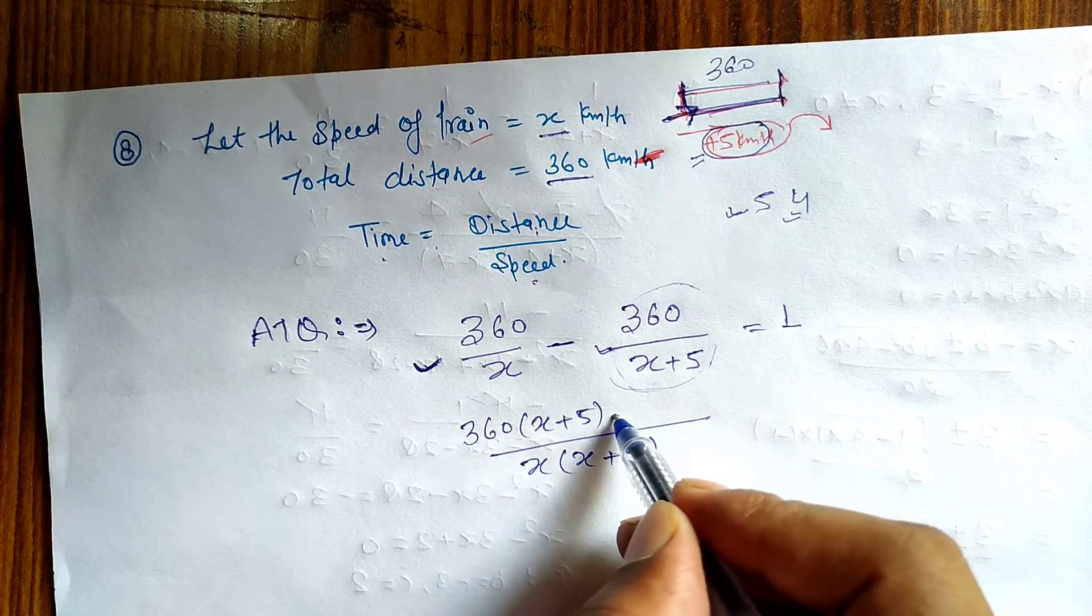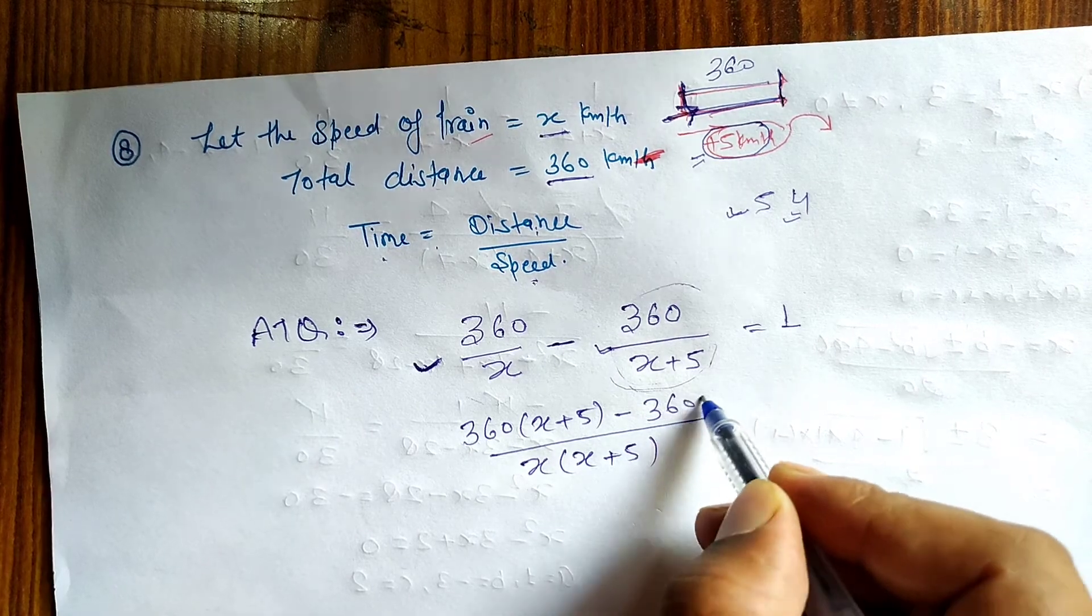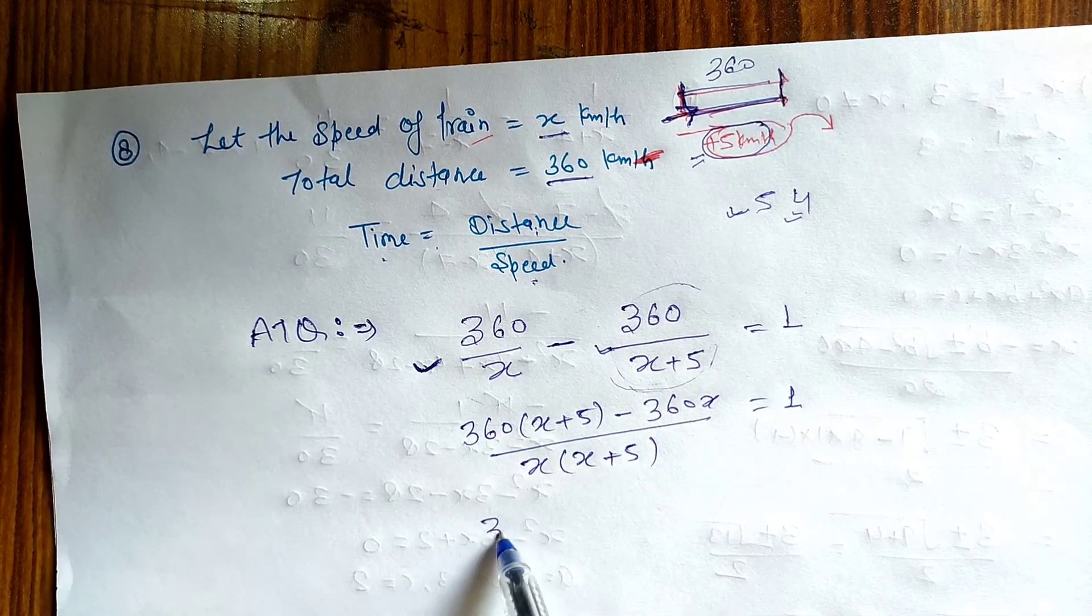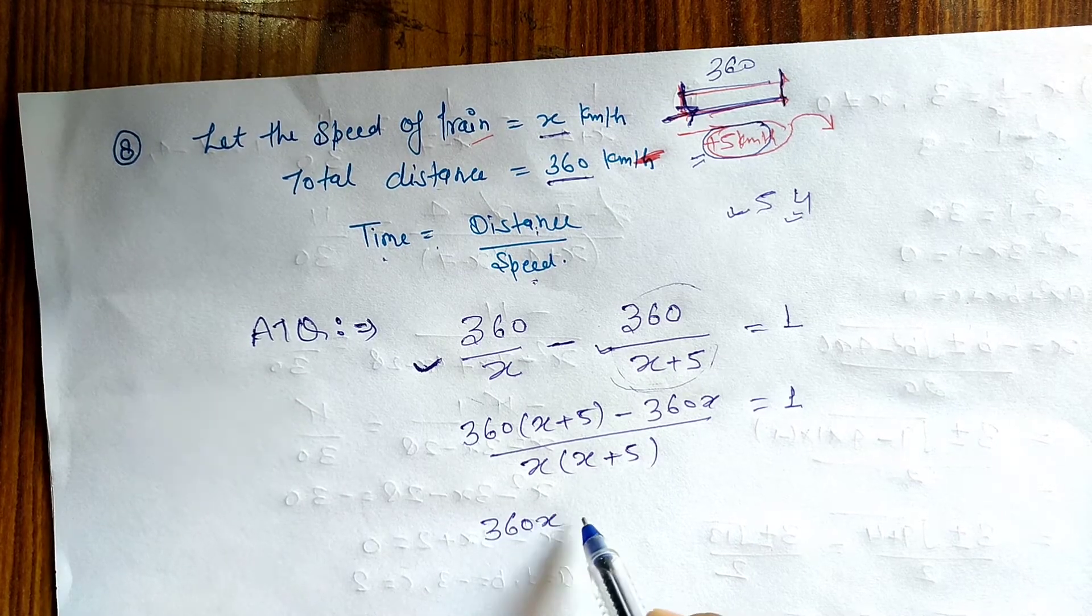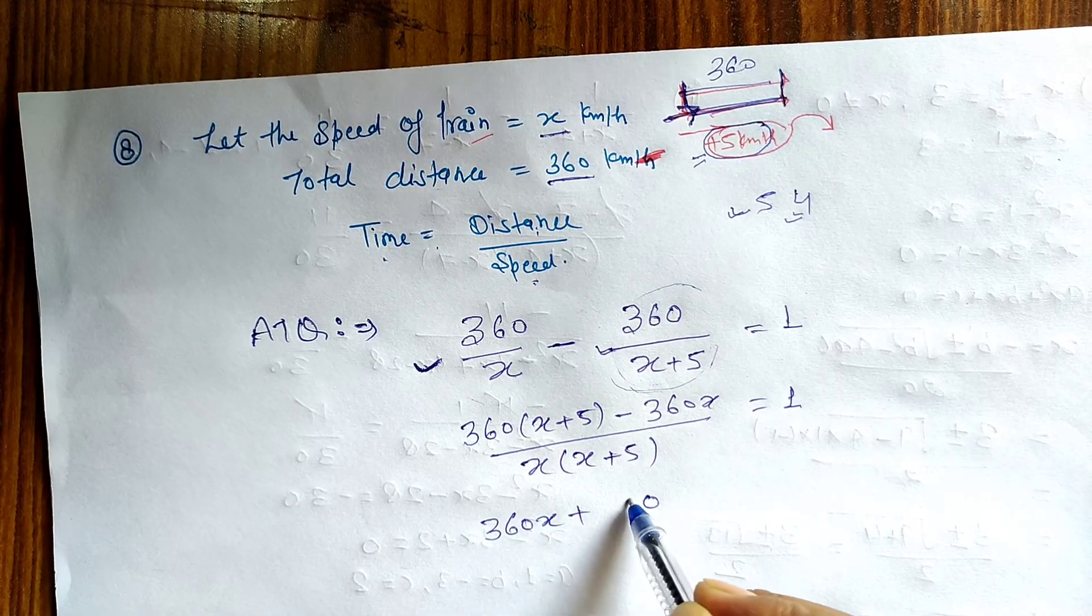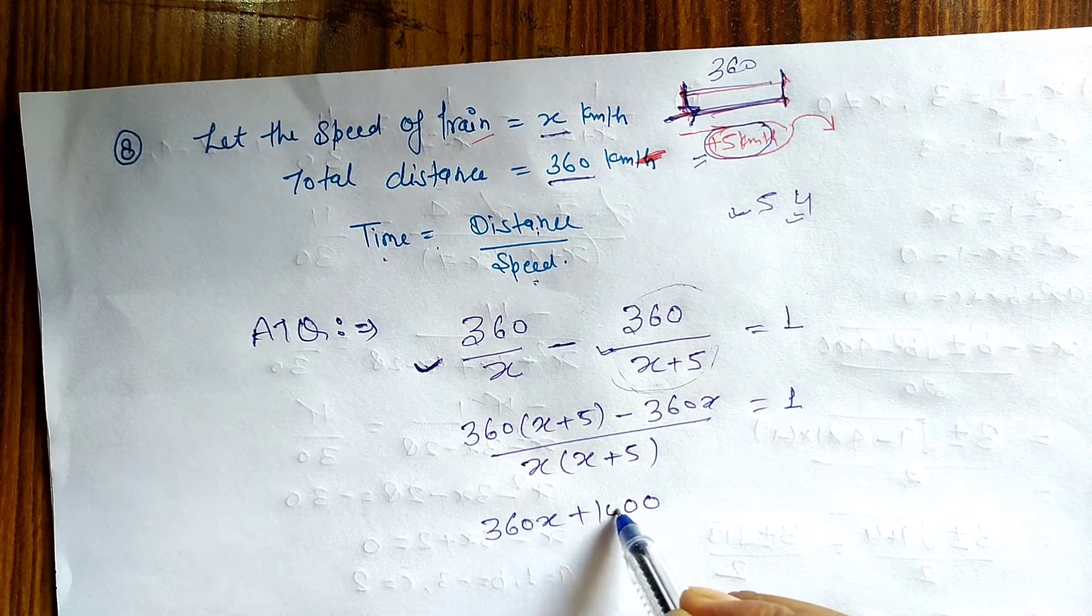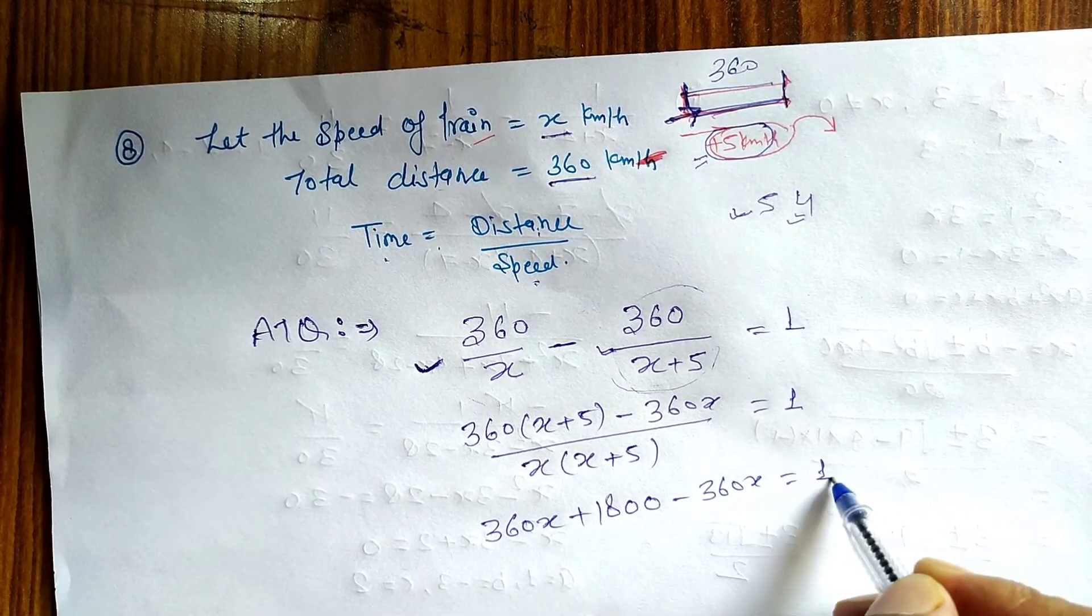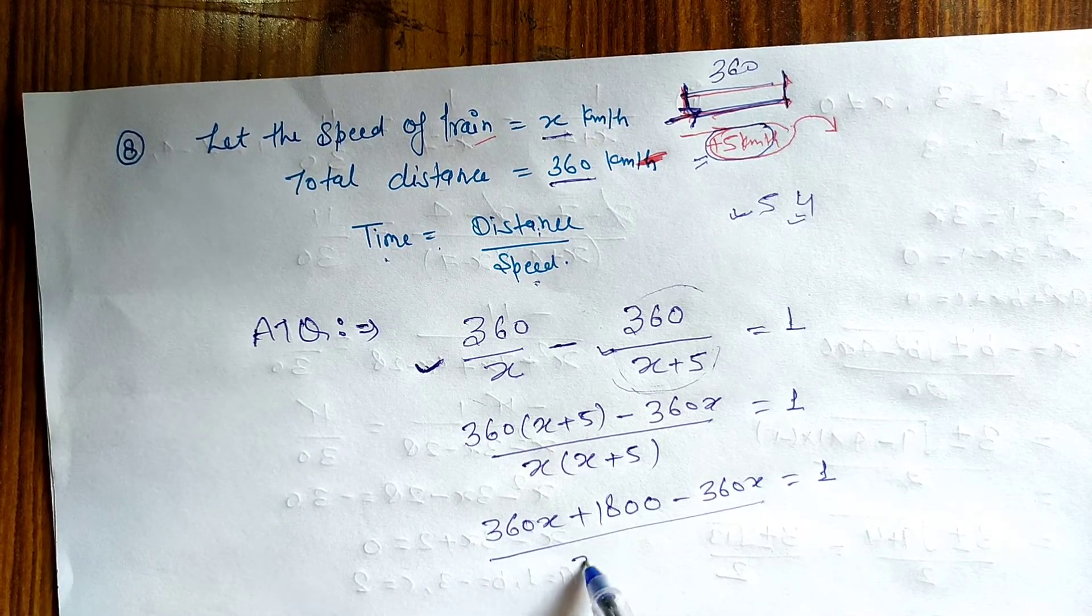X plus 5 then upon x. X cancel out aur iski multiply, ye kar lo. 360 x equal to 1. Now multiply this, to ho gaya mera 360 ke x plus 5 minus 360 x equal to 1, and this becomes x square plus 5x.